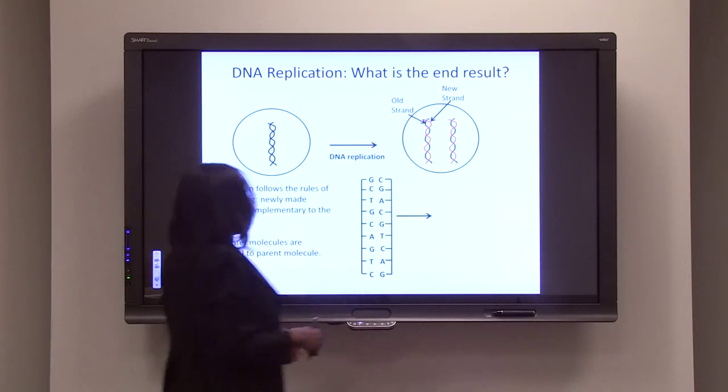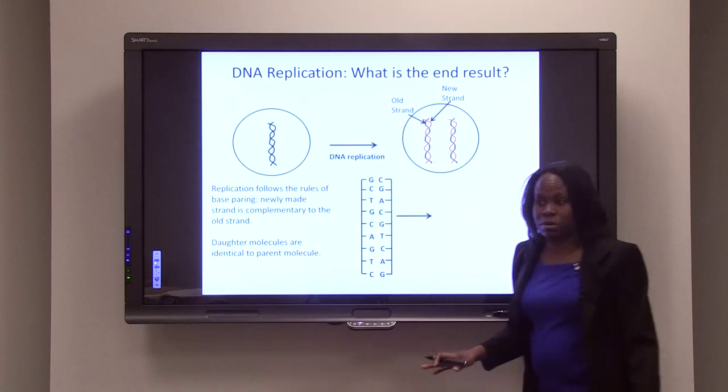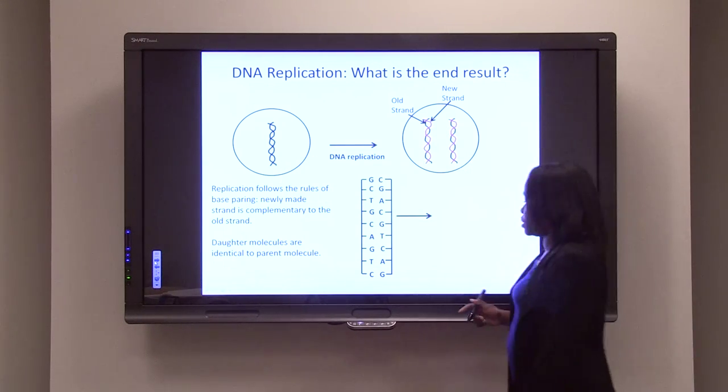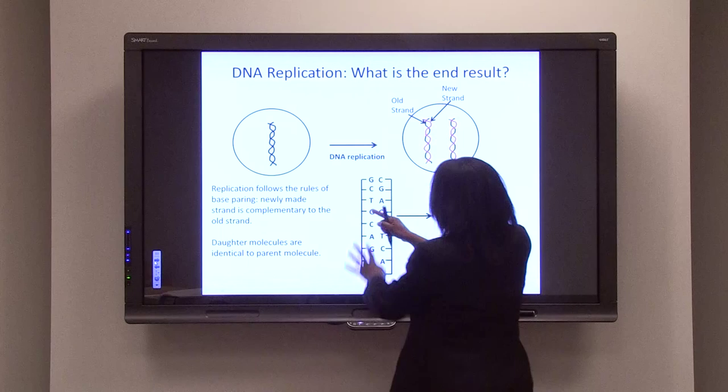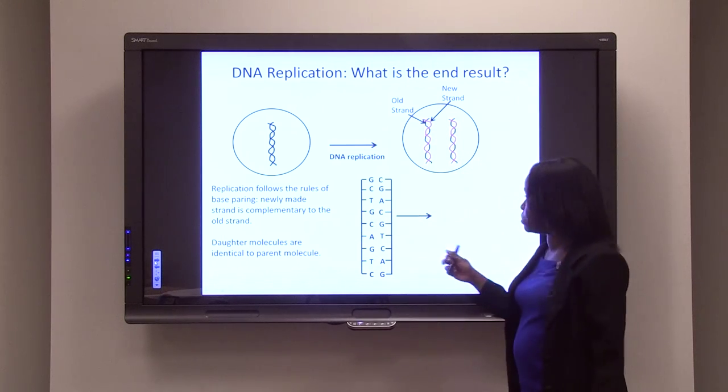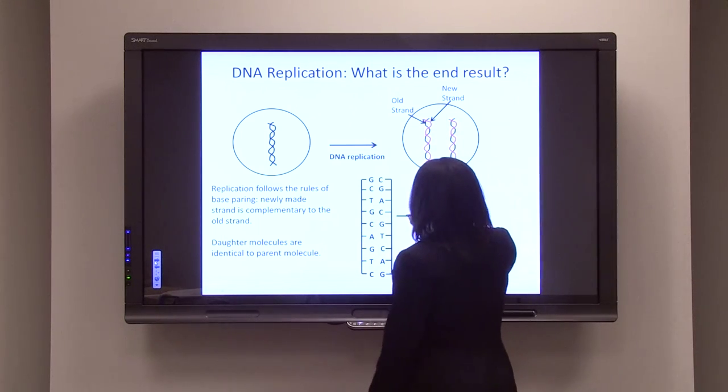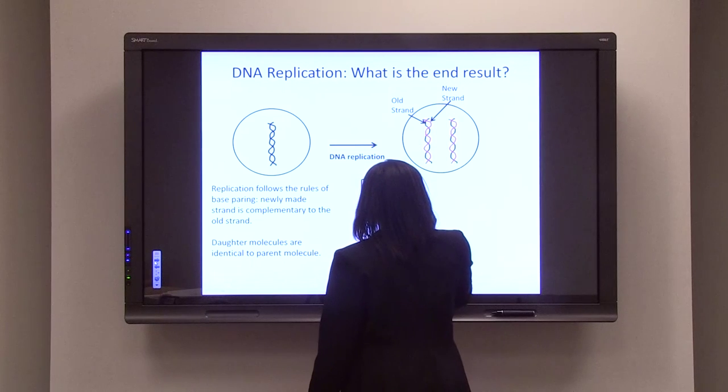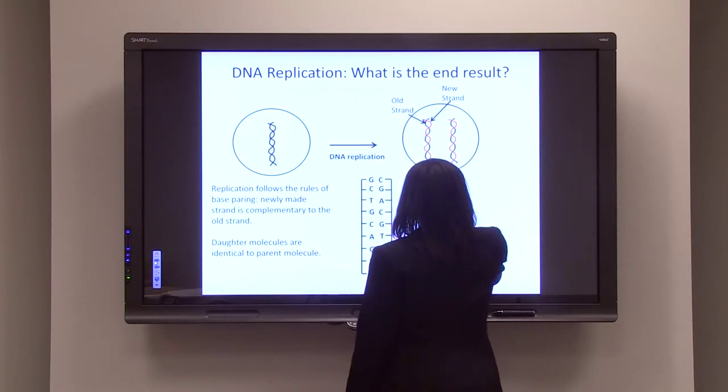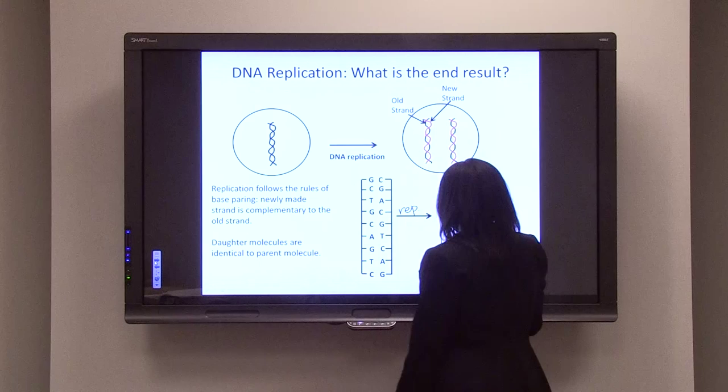So as I said, DNA replication follows base pairing rules. So this is what happens. Both of these strands are going to serve as templates. So what happens as a result of replication? You end up with two molecules.